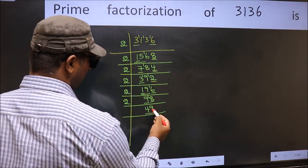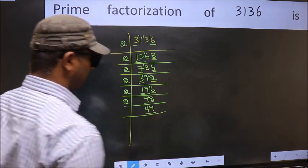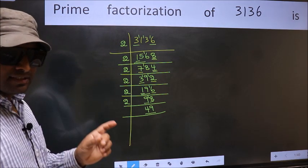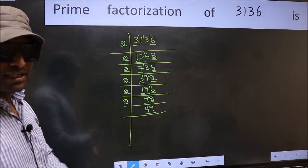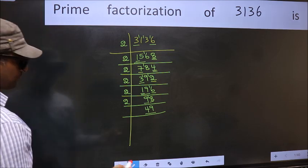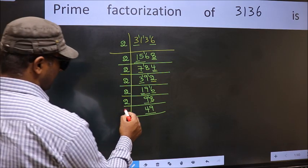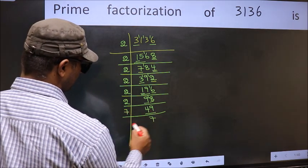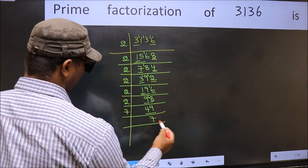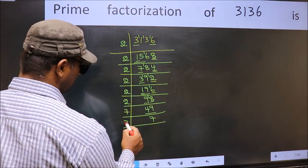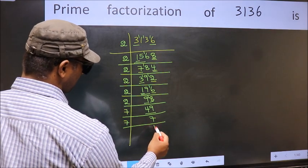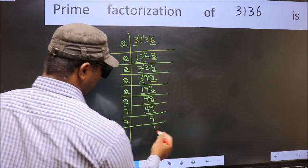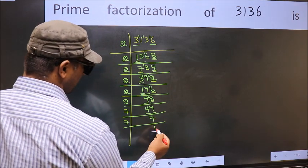Now here we have 49. Always remember: 7 into 7 is 49. That is, 7 times 7 is 49. Now we have 7 — 7 is a prime number, so 7×1=7. So we got 1 here.